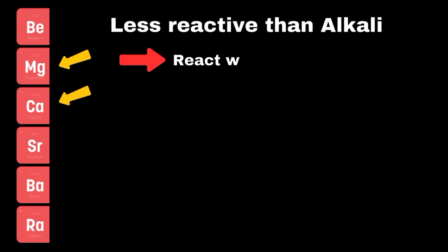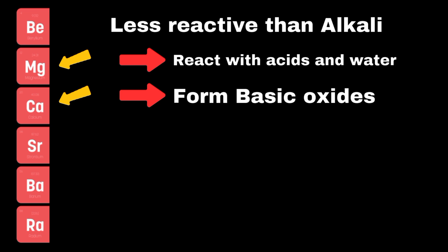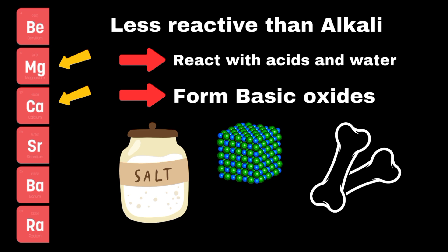Alkaline earth metals like magnesium and calcium are less reactive than alkali metals but still react with acids and water. Both groups form basic oxides and are essential in various applications, such as sodium in table salt and calcium in bones and teeth.